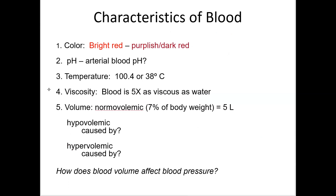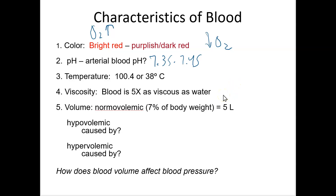Blood ranges in color from very bright red to a darker purple-red. When oxygen concentration is high, it looks bright red; when it has less oxygen, it looks darker red or purplish. The normal pH of arterial blood is 7.35 to 7.45, and blood is a little warmer than body temperature. Viscosity refers to how thick blood is — blood is about five times as viscous as water, similar to how maple syrup is more viscous than water. The normal blood volume is approximately five liters, making up roughly 7% of body weight.